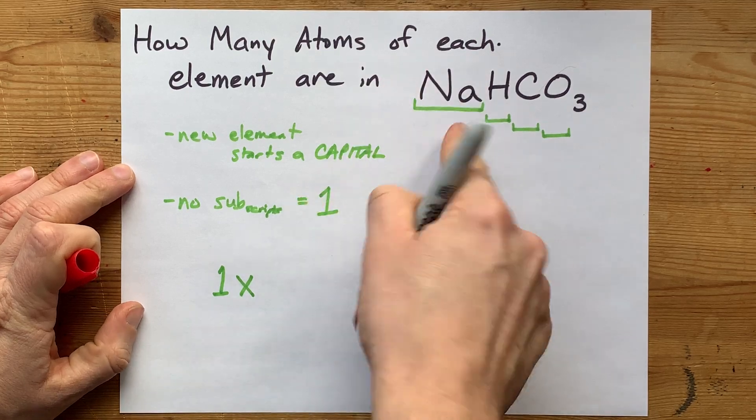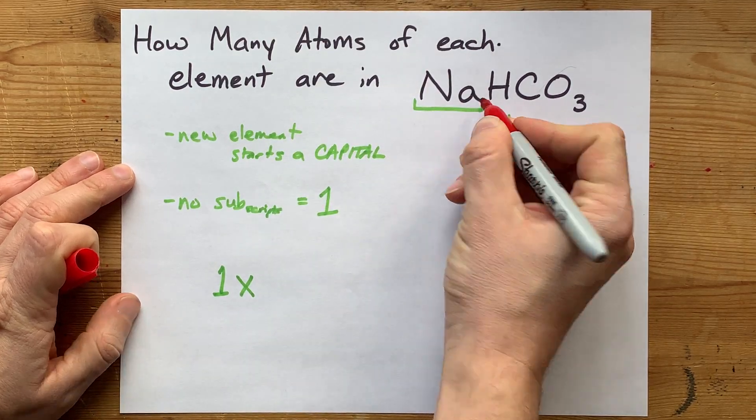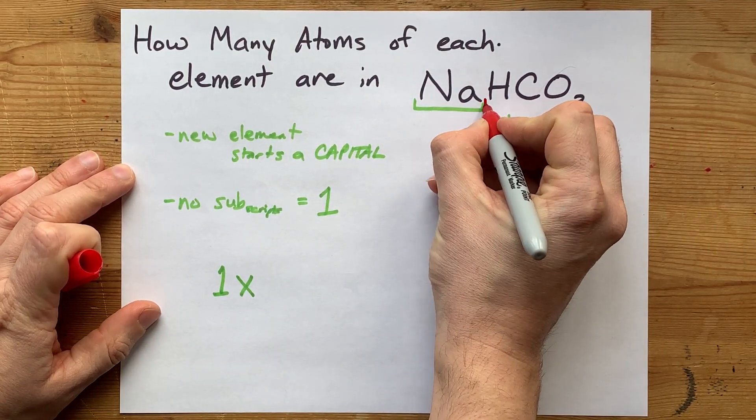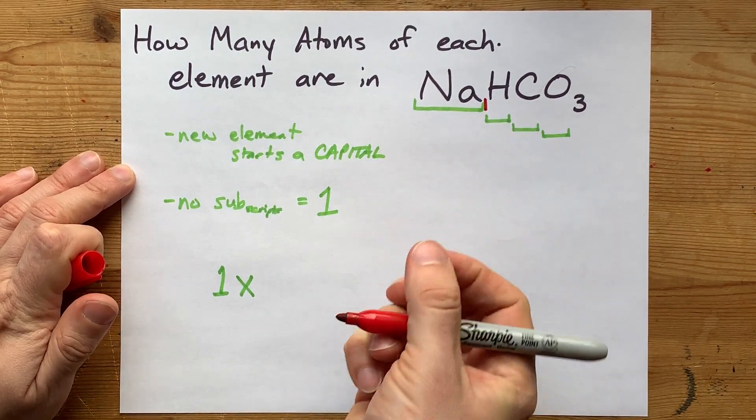So how many NAs do we have here? The subscript which is not written tells us that we have 1 of them. Now I'm going to physically write it there for you.